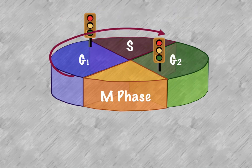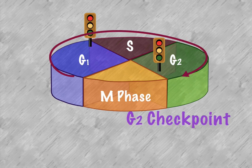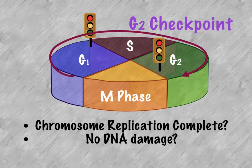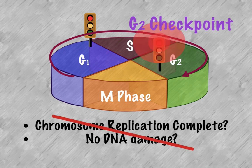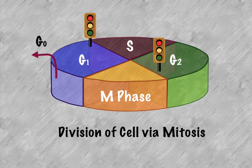DNA replication also has its own checkpoints. Then you get to the G2 checkpoint, and again you're checking for chromosome replication as it completes. Is there any damaged DNA? If there is, we stop the process and fix those mistakes. But if everything checks out, we continue on to the mitosis phase. Mitosis itself also has its own checkpoints.